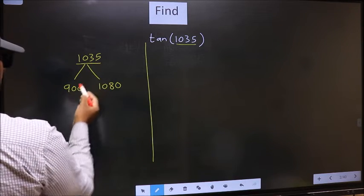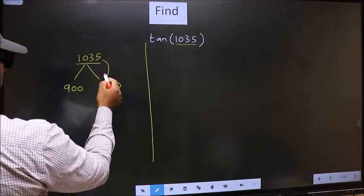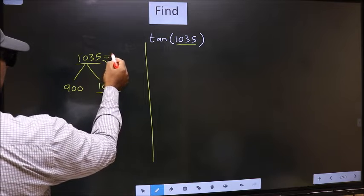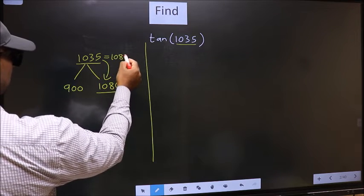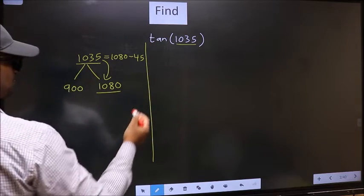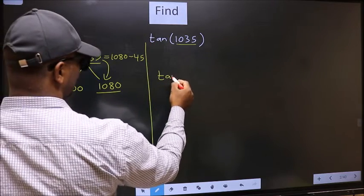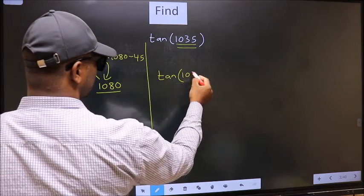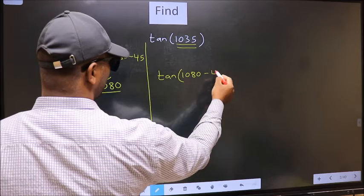1035 is close to which number? This is close to 1080. So in place of this, we write 1080 minus 45. So this will become tan. In place of this, we write this: 1080 minus 45.